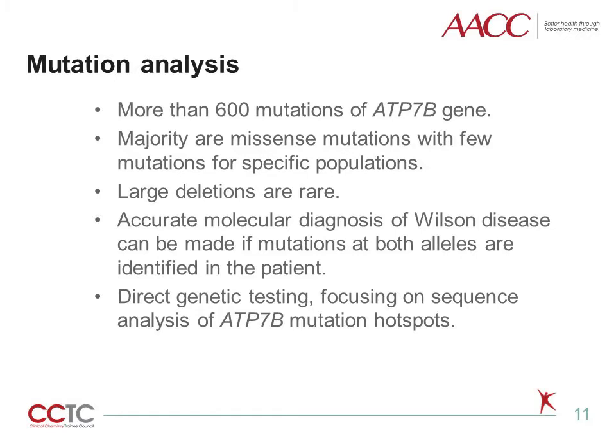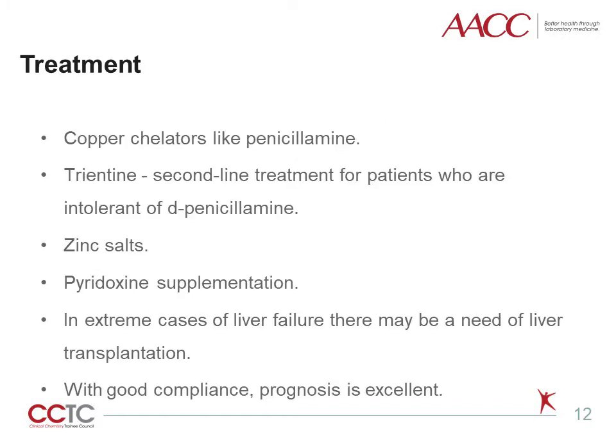There are more than 600 mutations of the ATP7B gene. The majority of mutations are missense mutations, with few mutations for specific populations. It is very rare to find large deletions. When mutations at both alleles are identified in the proband, a definitive diagnosis of Wilson's disease can be made. Direct genetic testing, focusing on sequence analysis of ATP7B mutation hotspots, is the mode of detection of mutations.